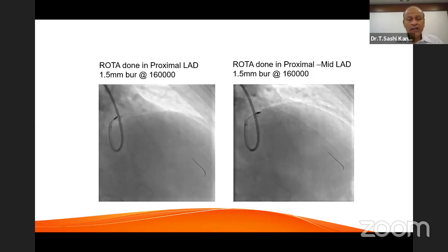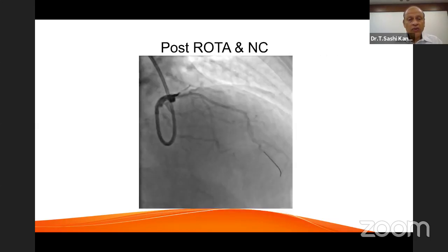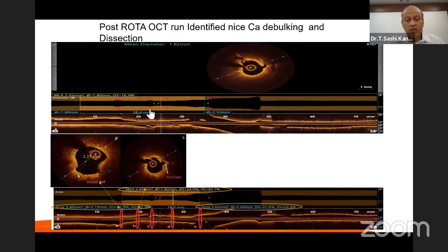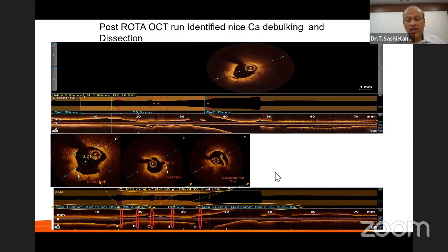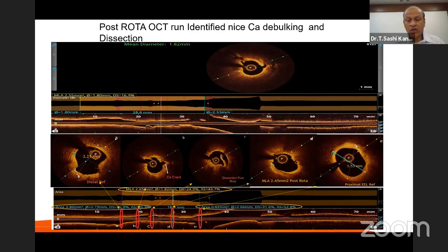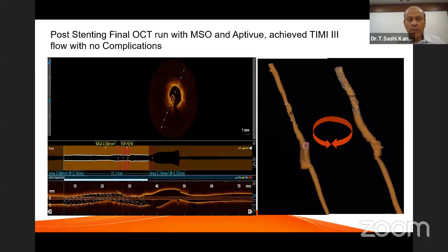The proximal LAD lesion was predilated with a balloon, and post-rotablation OCT clearly showed a significant break in the calcium and a dissection flap — beautiful pictures confirming the result. Post-rotablation, a good stent result was achieved, and the final OCT run showed good flow, no complications, and no dissections.